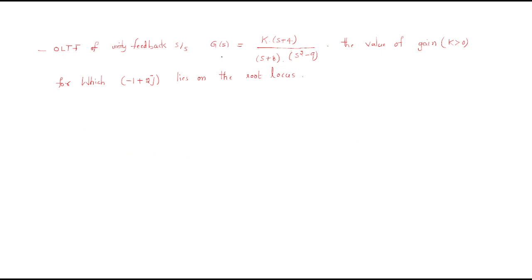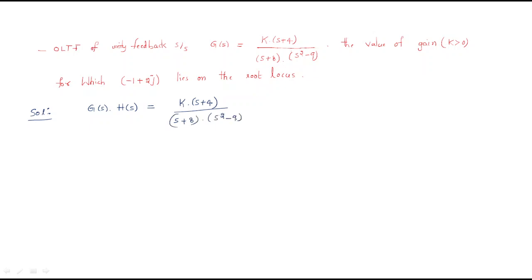The next problem: the open loop transfer function of a unity feedback system is G(s) equals K(s+4) divided by (s+8)(s²−9). Find the value of gain K greater than zero for which minus 1 plus 2j lies on the root locus. Since it is unity feedback, H(s) equals 1, so G(s)H(s) equals K(s+4) divided by (s+8)(s²−9).